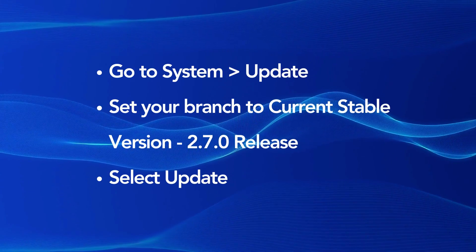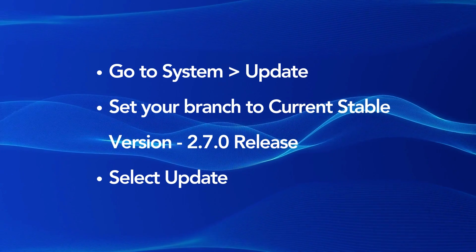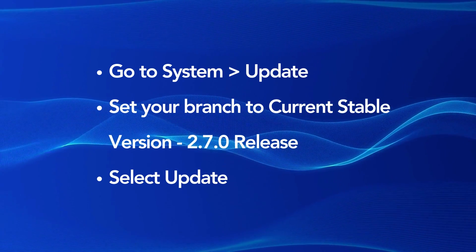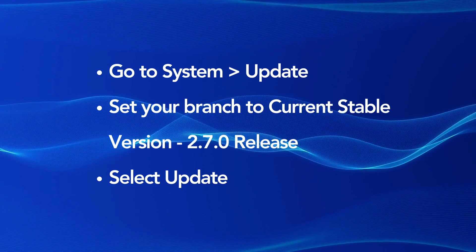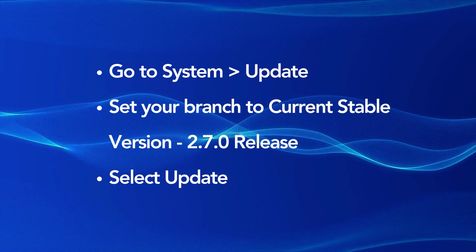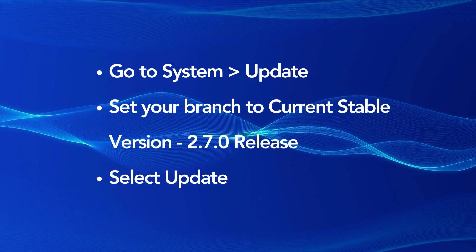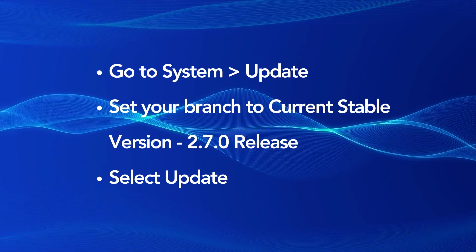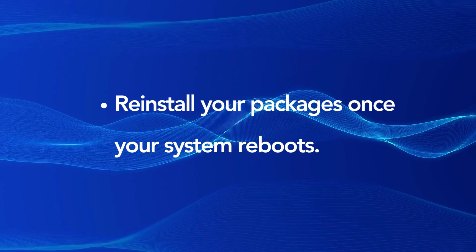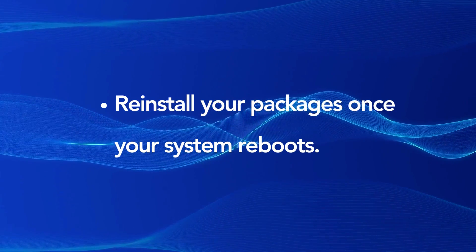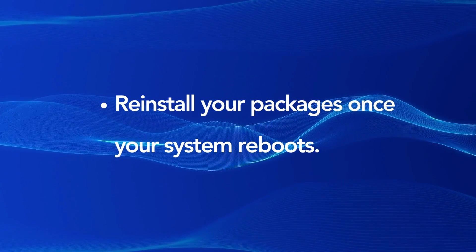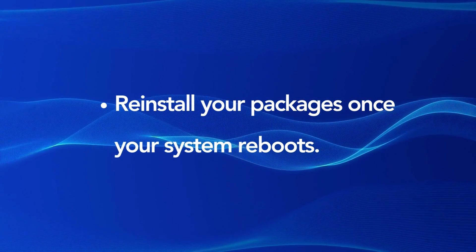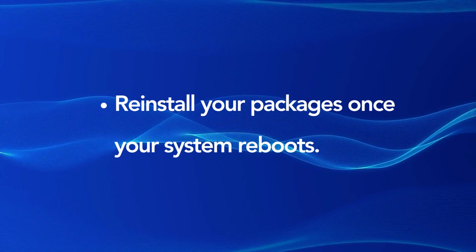Open up the system drop-down and select update. Set your branch to the current stable version, 2.7.0 release, if it isn't selected already. You should then be prompted to upgrade. If not, refreshing the page should display the option to upgrade. And that's it — your router will handle the rest. Once it reboots, you should be running 2.7. You can now reinstall your packages, and they should have their configuration preserved.